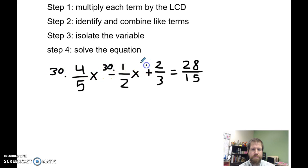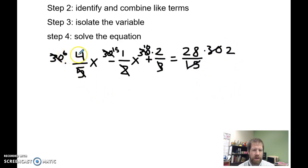So I've got to multiply each of these by 30. Then I come through and I factor them out. 5 times 6 is 30. So I cross those out and replace it with 6. 2 times 15 is 30. So I have 15 here. 3 times 10 is 30. So I'd have 10 there. 15 times 2 is 30. So I would have 2 there. Then I have 6 times 4, or 24x minus 15 times 1, 15 times x plus 10 times 2, 20. Which is equal to 28 times 2 or 56.